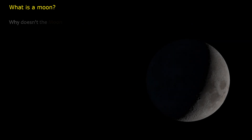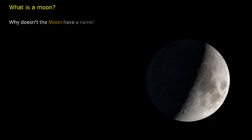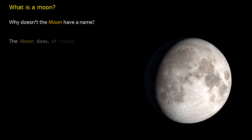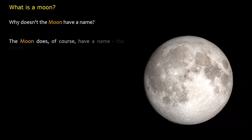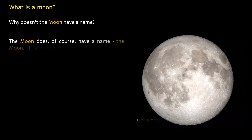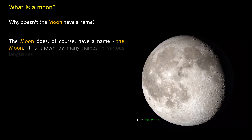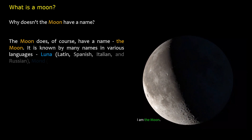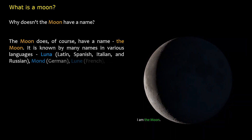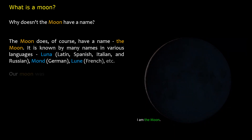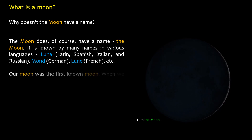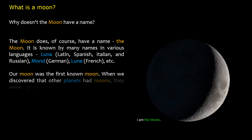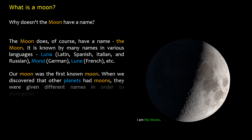Why doesn't the Moon have a name? The Moon does of course have a name — the Moon. It is known by many names in various languages: Luna in Latin, Spanish, Italian, and Russian; Mond in German; Lune in French, etc. Our Moon was the first known moon, and when we discovered that other planets had moons, they were given different names in order to distinguish them from our Moon.